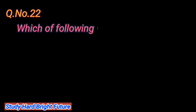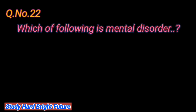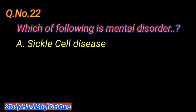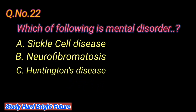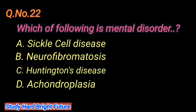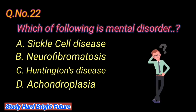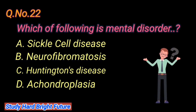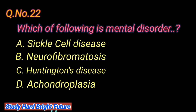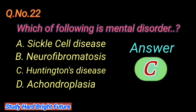Question number 22: Which of the following is a mental disorder? A. Sickle cell disease, B. Neurofibromatosis, C. Huntington's disease, D. Achondroplasia. The right answer is C. Huntington's disease.